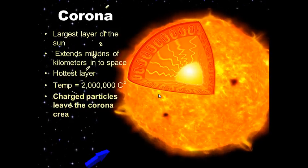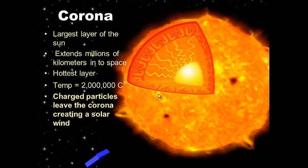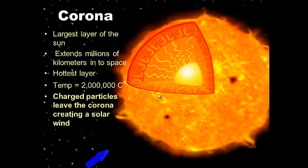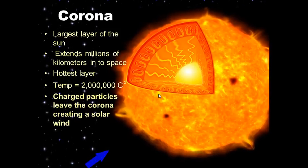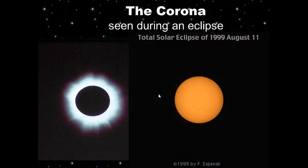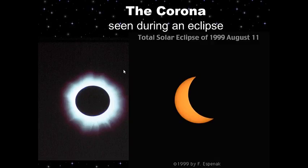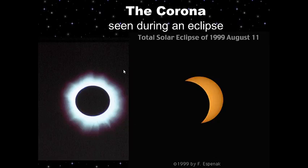In the corona, charged particles leave the Sun's surface, creating what's called the solar wind. The corona is where the solar wind forms — charged particles that shoot off from the Sun. The corona can only be seen during a total eclipse, when the Moon passes in front of the Sun and reveals it.